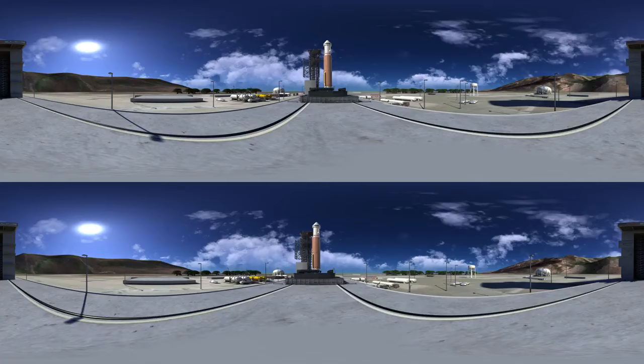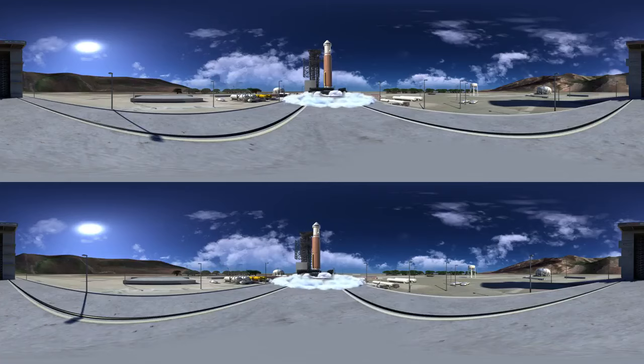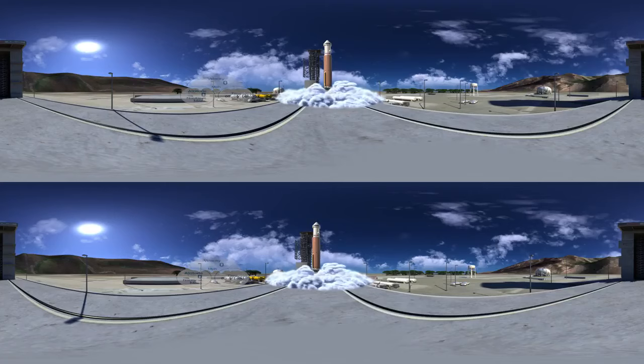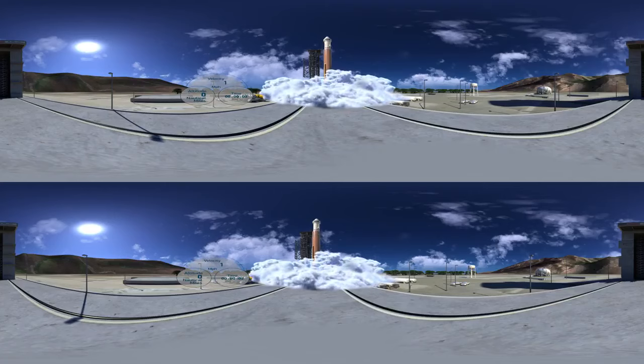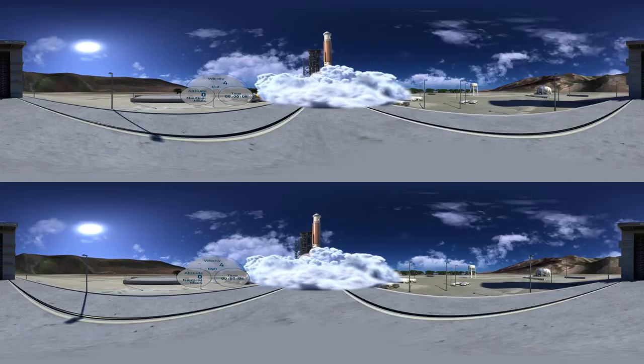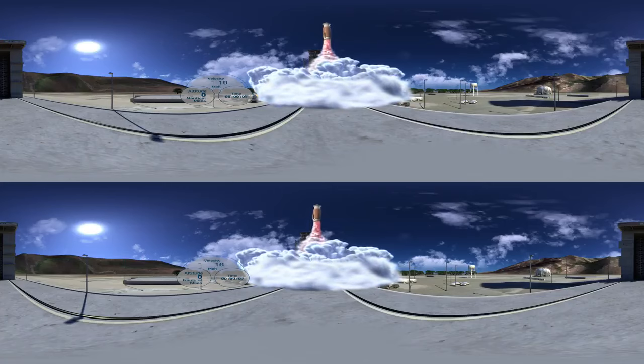What does it take to see a better world? 3, 2, we have ignition. And we have liftoff of the United Launch Alliance Atlas V rocket. Missile has cleared the tower.